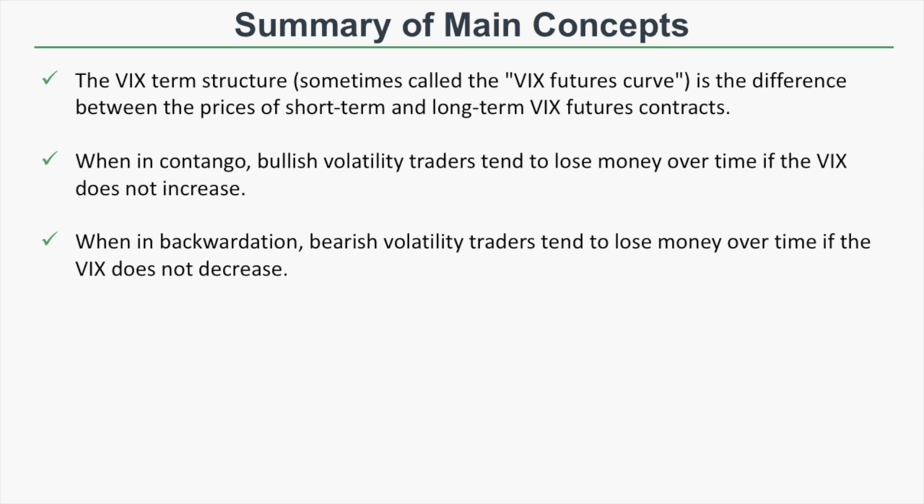When the VIX futures curve is in backwardation, near-term VIX futures contracts are more expensive than longer-term contracts. Bearish volatility positions tend to lose money over time if the VIX does not decrease — because the performance of volatility strategies and products is tied to the near-term VIX futures contracts. If the curve is in backwardation, those near-term contracts will increase in price towards the VIX index if volatility remains elevated, causing bearish positions to underperform.